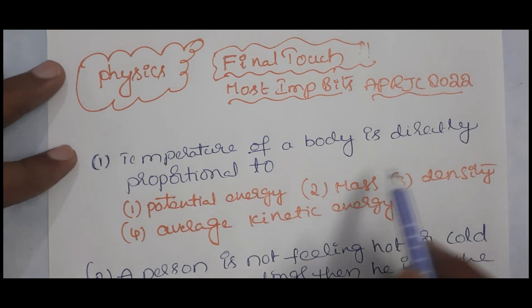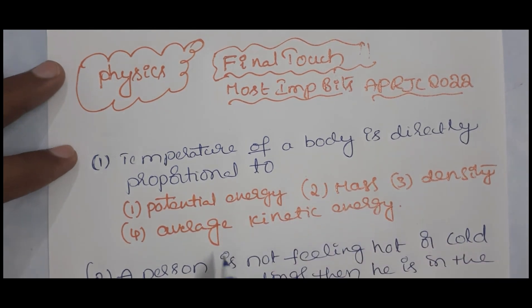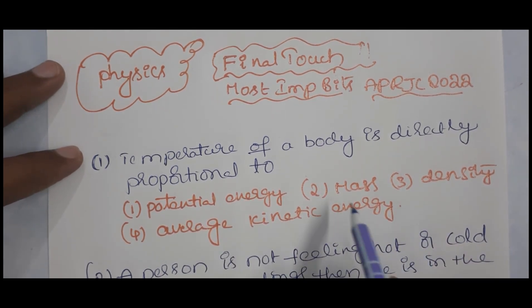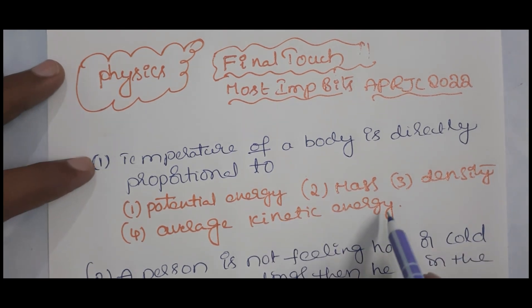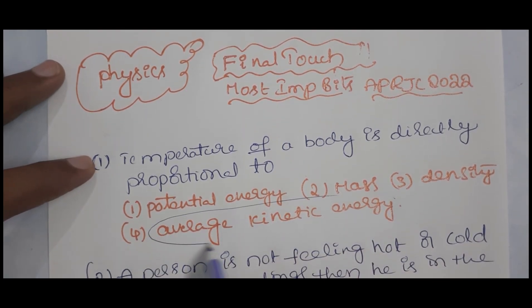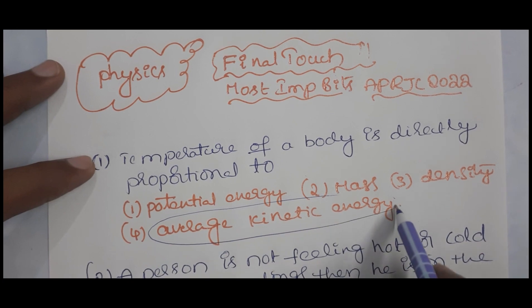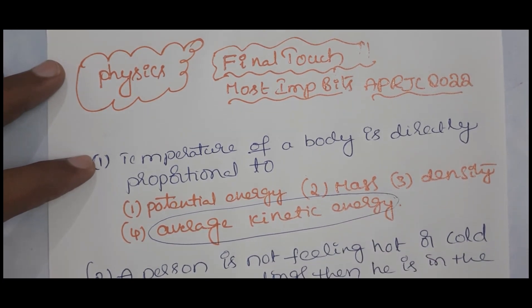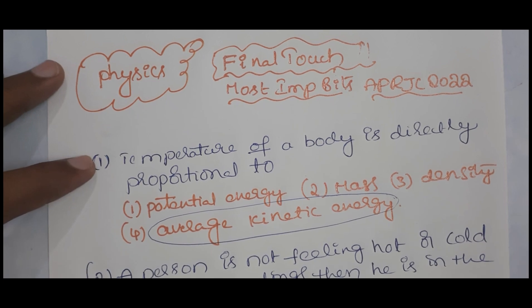The temperature of a body is directly proportional to average kinetic energy. When kinetic energy of the substance increases, temperature also increases. When temperature decreases, average kinetic energy also decreases.